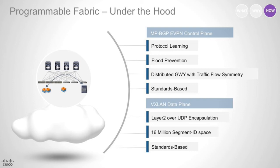And then on top of that, it's again a standards-based, multi-protocol BGP EVPN-based control plane. That really gives you the additional semantics to get the power of a VXLAN-based data plane — protocol learning, flood prevention, distributed gateway, and traffic flow symmetry. Those are the key aspects of this standards-based data plane.